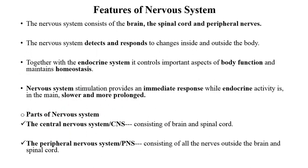Before starting the anatomy of the Nervous System, there are some important features. The Nervous System consists of the brain, spinal cord, and peripheral nerves. The Nervous System detects and responds to changes inside and outside of the body. The Nervous System works along with the endocrine system.